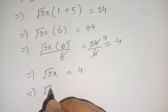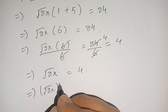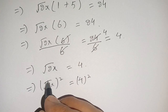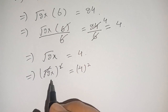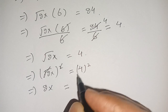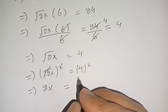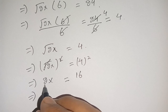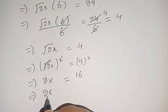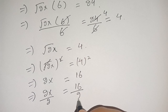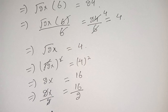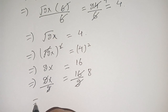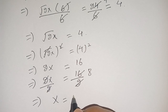Now squaring both sides, square root of 2x squared equals 4 squared, which gives 2x equals 16. Dividing both sides by 2, we get x equals 16 divided by 2, and since 2 times 8 equals 16, our value of x is equal to 8.